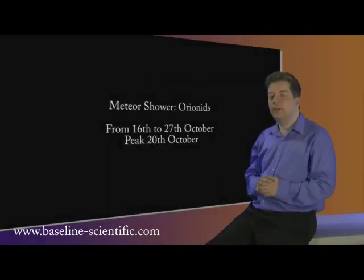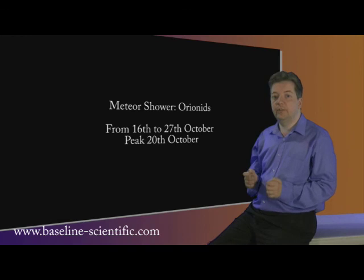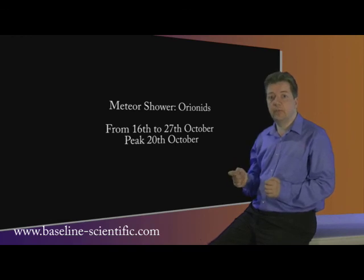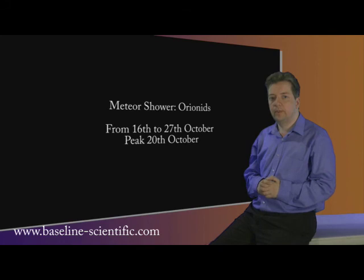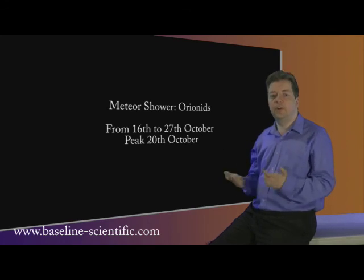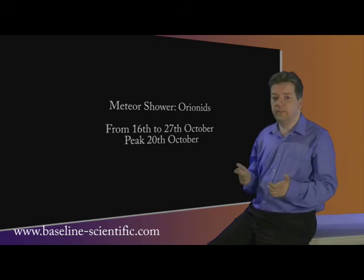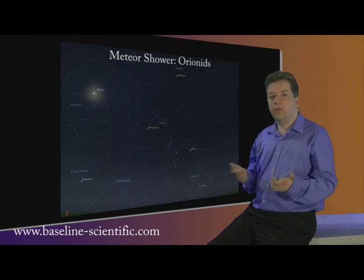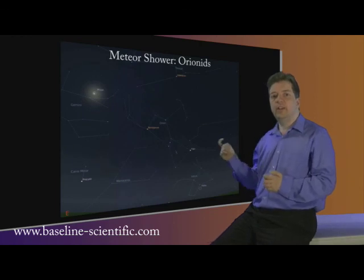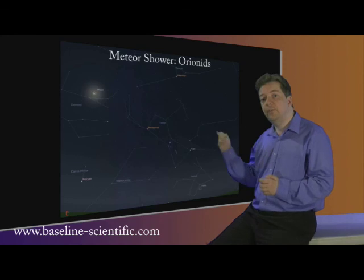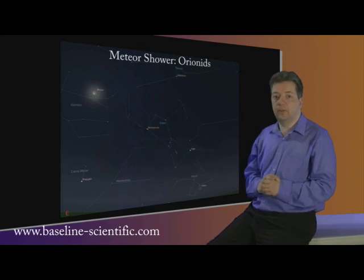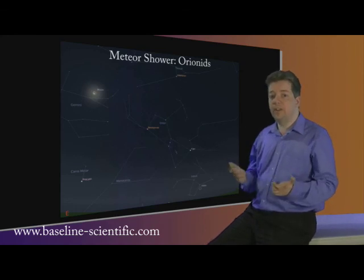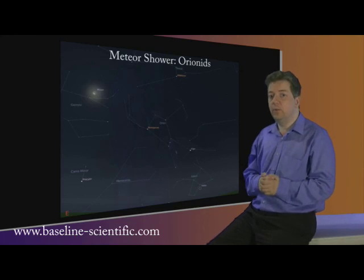October has only one meteor shower, the Orionids. This can normally be seen from the 16th till the 27th, with the peak being on the 20th. The rate is expected to be about 25 per hour. However, the Moon will hinder observations of the fainter meteors. Orion can be seen rising in the east early on the 20th, and it is from here that the meteors will appear to come. Of course, if you can't see any meteors, you can always just enjoy the welcome return of Orion to the winter skies.